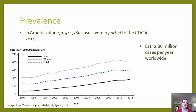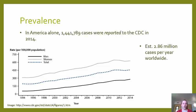Chlamydia is the most common STD in America and the world. In America alone, over a million cases were reported to the CDC in 2014 — not accounting for unreported cases. Worldwide, an estimated 2.86 million cases occur per year. Rates have been increasing for both men and women, possibly because of more unprotected sex, though from 2012 to 2014 rates decreased slightly as awareness has grown.